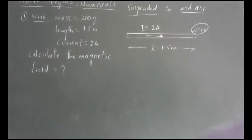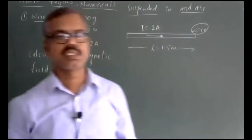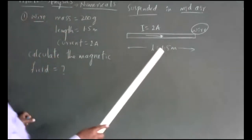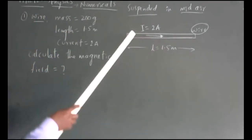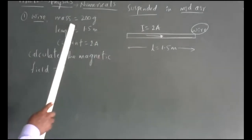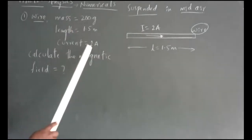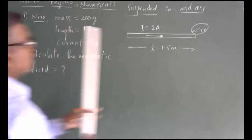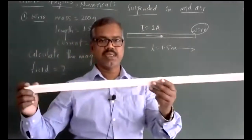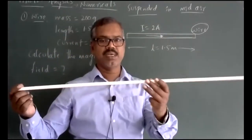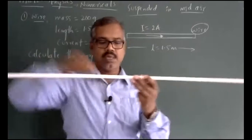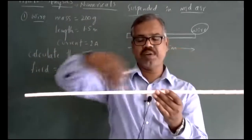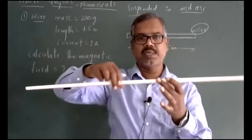This is a worked example where we have a wire of length 1.5 meter. It carries a current of 2 ampere. The mass of the wire is 200 gram. Current is 2 ampere. The length of the wire is 1.5 meter and mass is 200 gram.